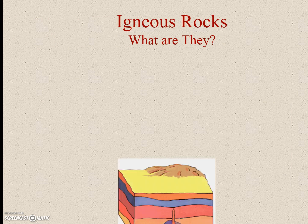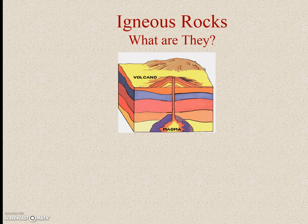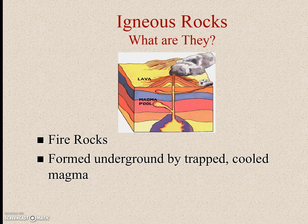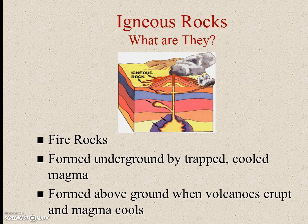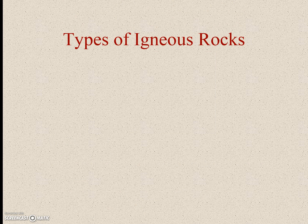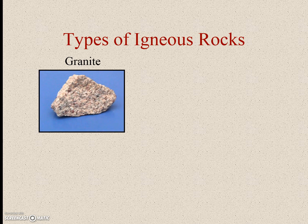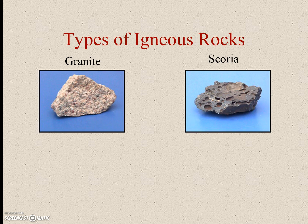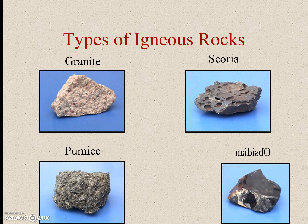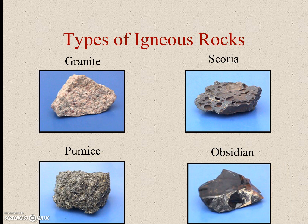Igneous rocks — what are they? These have to do with volcanoes and magma and lava and all that different kind of stuff. These are also called the fire rocks. They are formed underground by trapped and cooled lava if they're intrusive, and they can be formed above ground, which is extrusive, when volcanoes erupt and magma cools. Some types of igneous rocks to know are granite, scoria, pumice, and obsidian, which is the shiny black one.